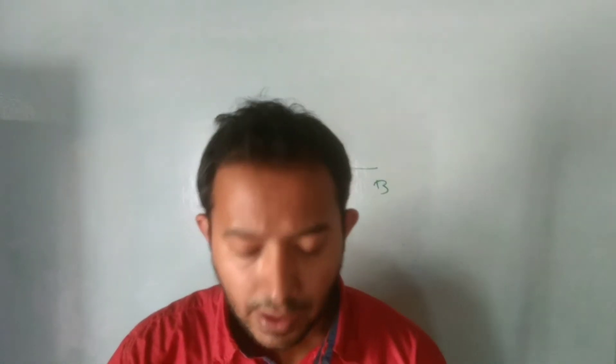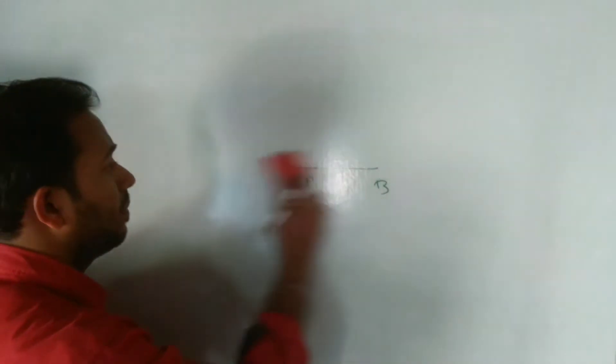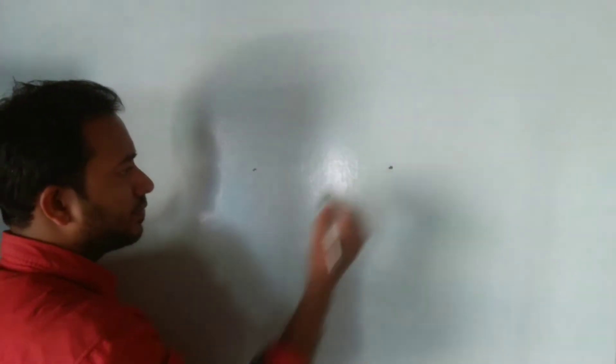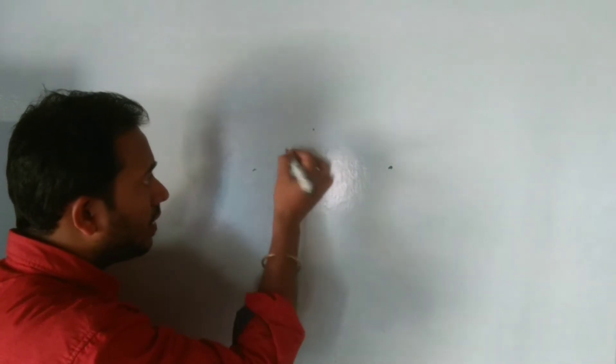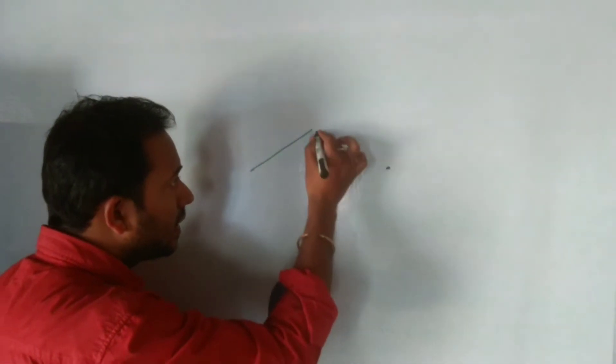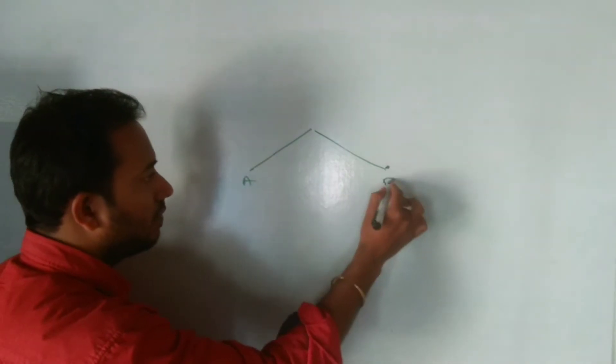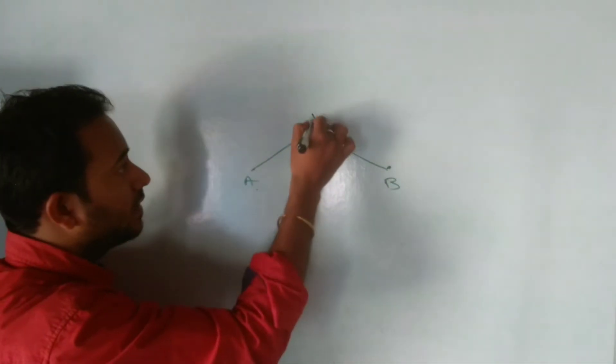Namaste students, here we're going to see the difference between midpoint and equidistance concepts. Let's take an example: two points, and if the third point will be here, which is equal distance from the other two points.